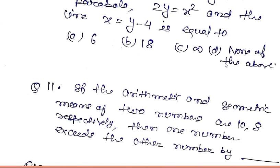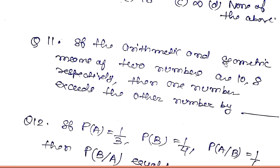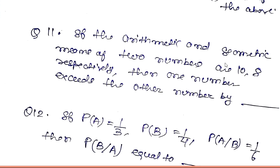Question number eleven: if the arithmetic and geometric means of two numbers are 10 and 8 respectively, then one number exceeds the other number by blank.